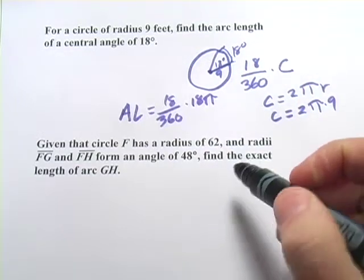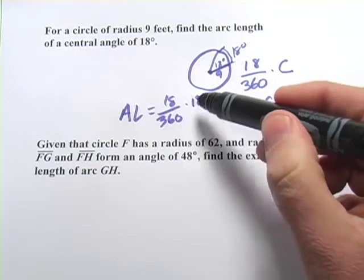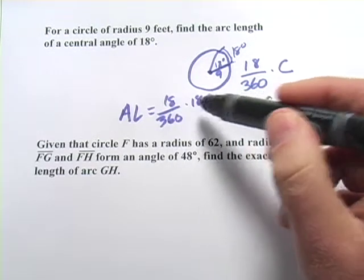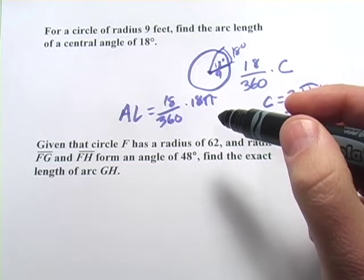And at this point you probably want to just plug that in your calculator. You might type in 18 divided by 360 times 18 times π, or in any order really, 18 times 18 times π divided by 360. Either way, it's going to come out to be the same thing.